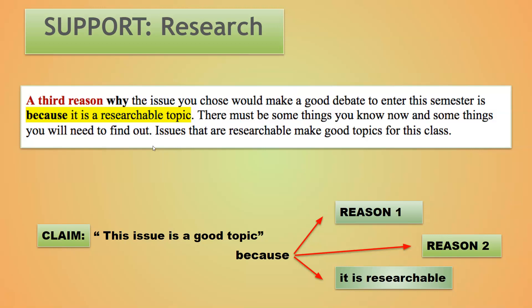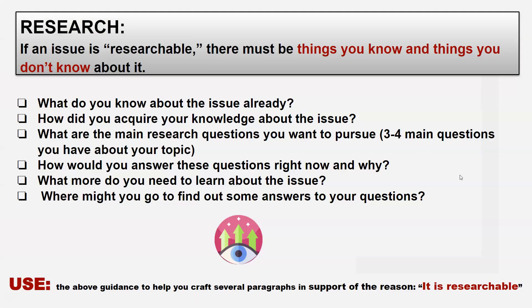The third reason is that it is a researchable topic. There must be some things you know now and some things you will need to find out — issues that are researchable make good topics for this course. If an issue is researchable, there are things you know and things you might not know yet, and that is perfectly okay. Ask yourself: What do you know about the issue already? How did you acquire that knowledge? What are the main research questions you want to pursue — maybe three to four main questions — and where might you go to find answers?